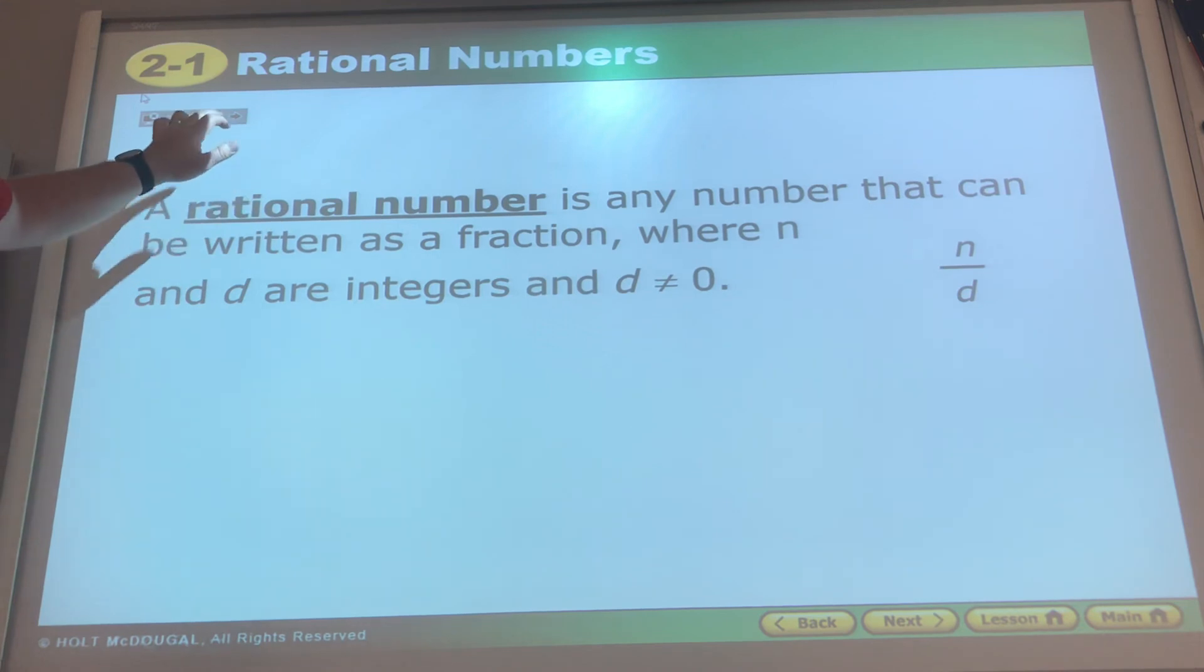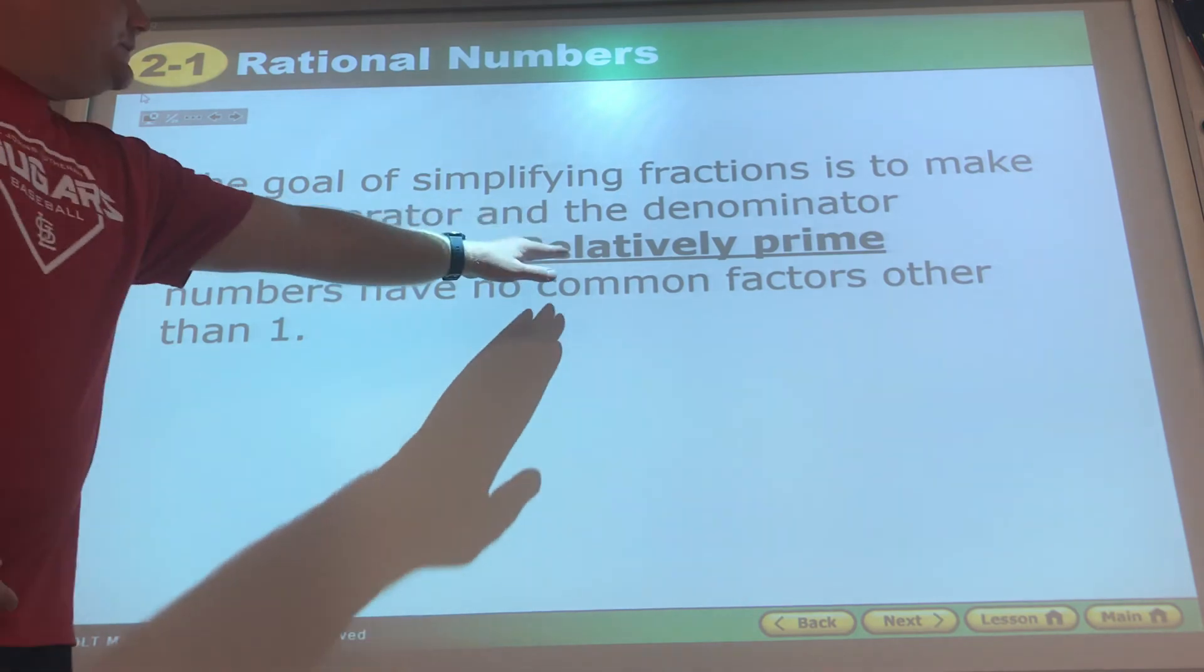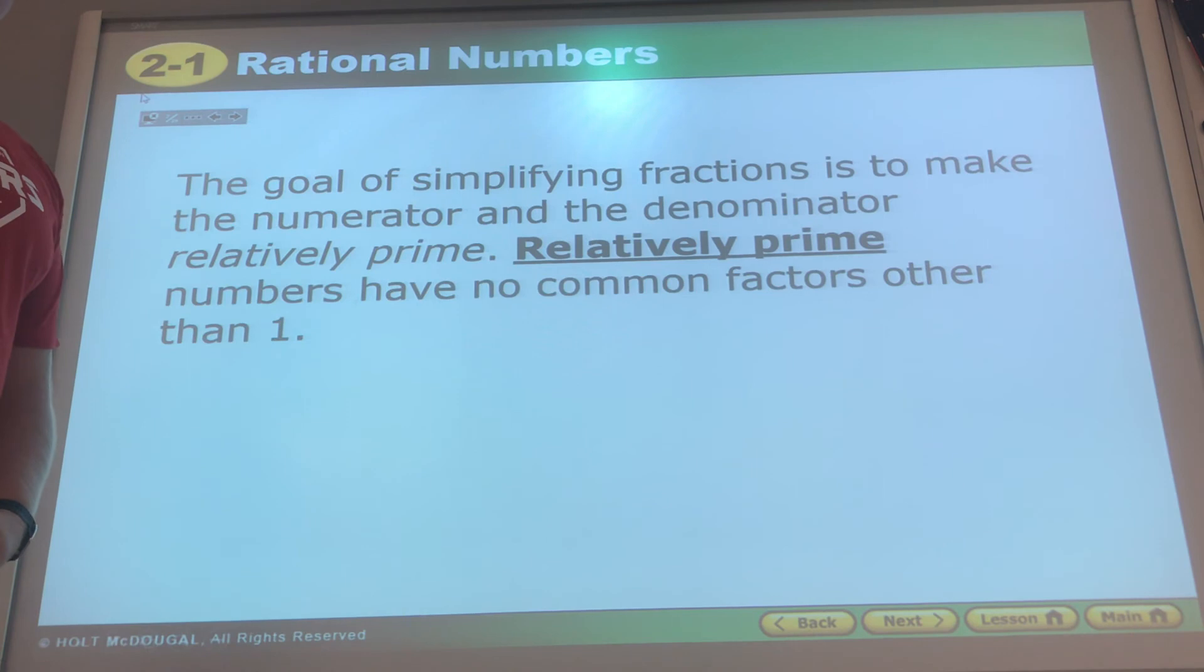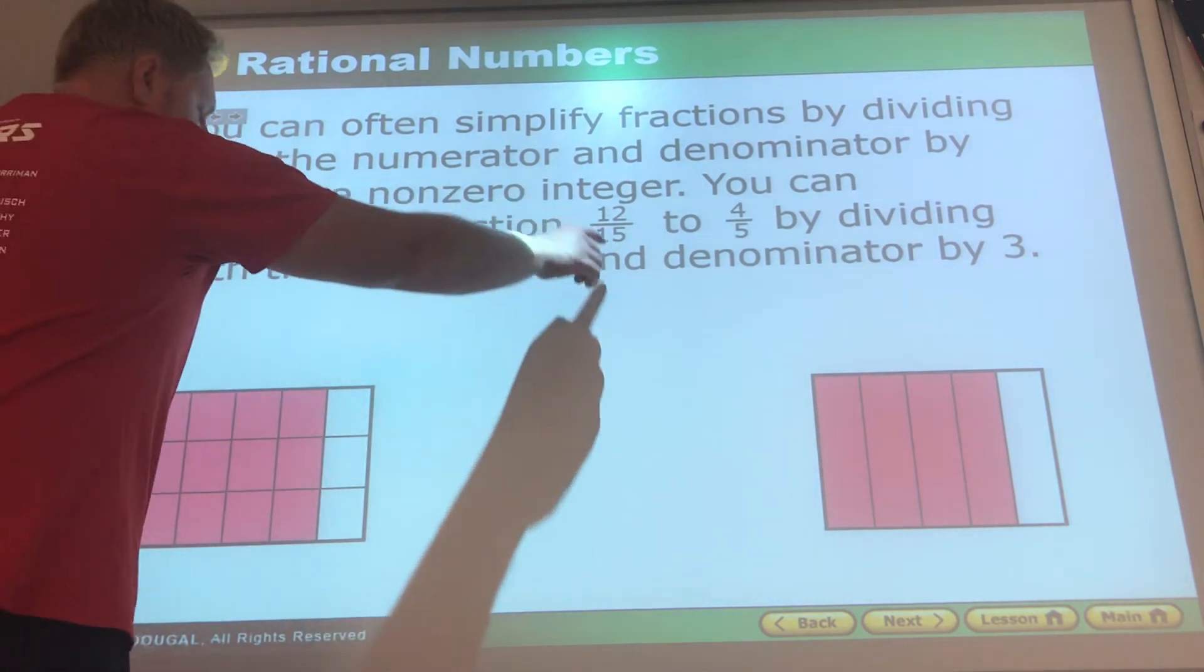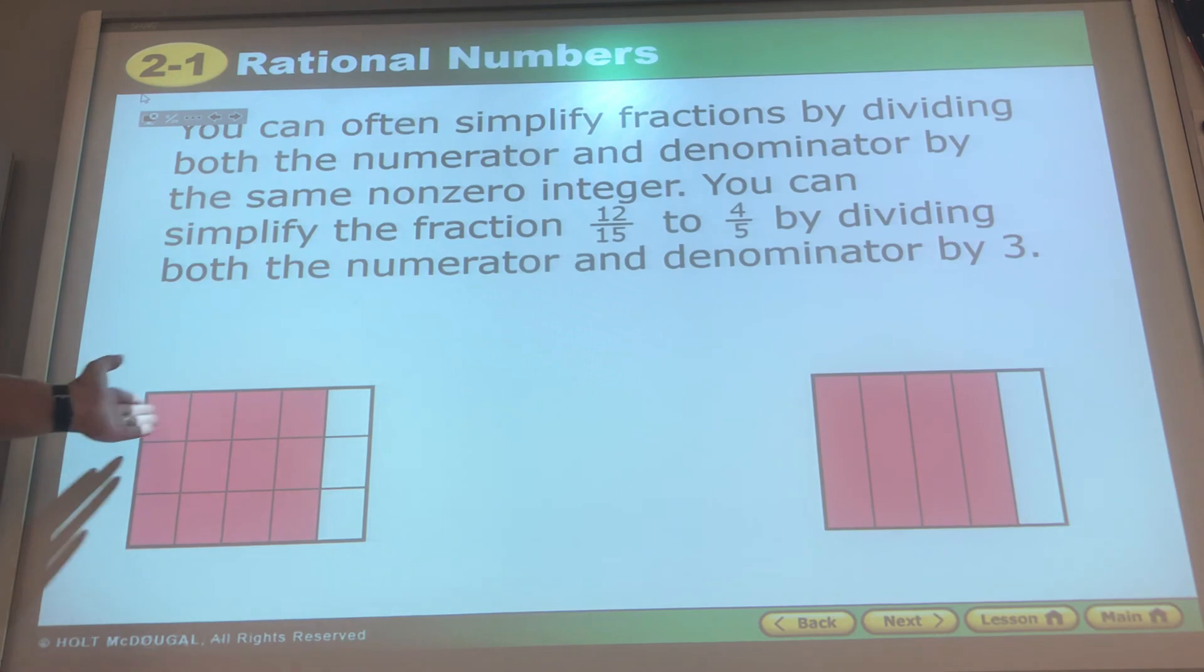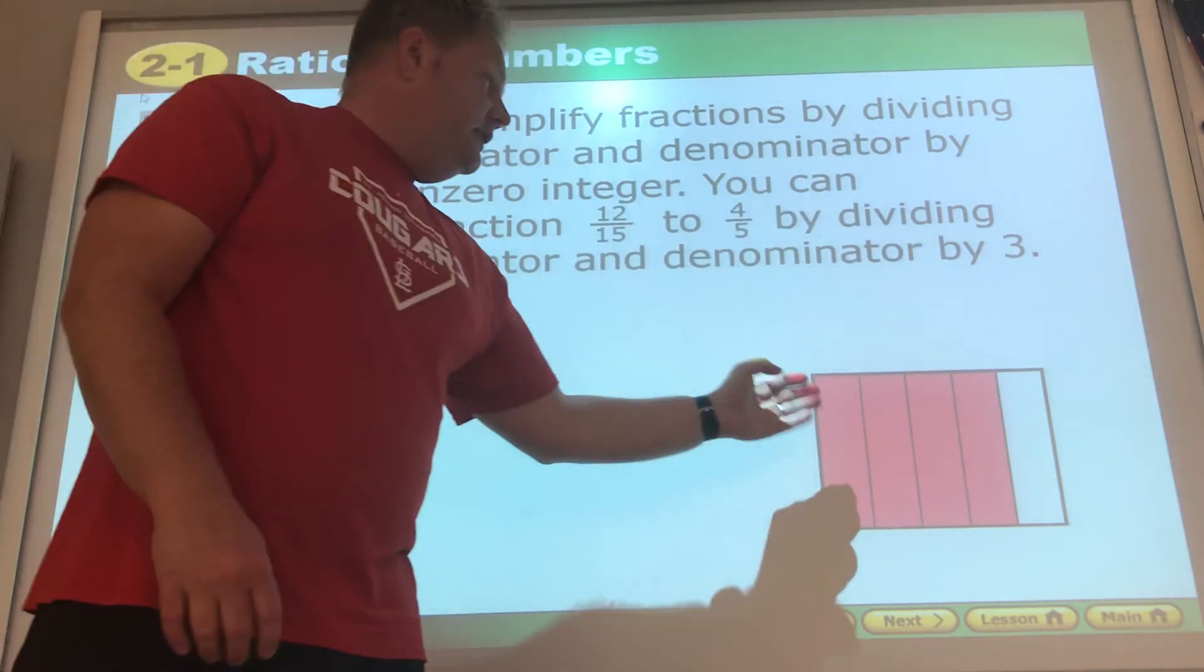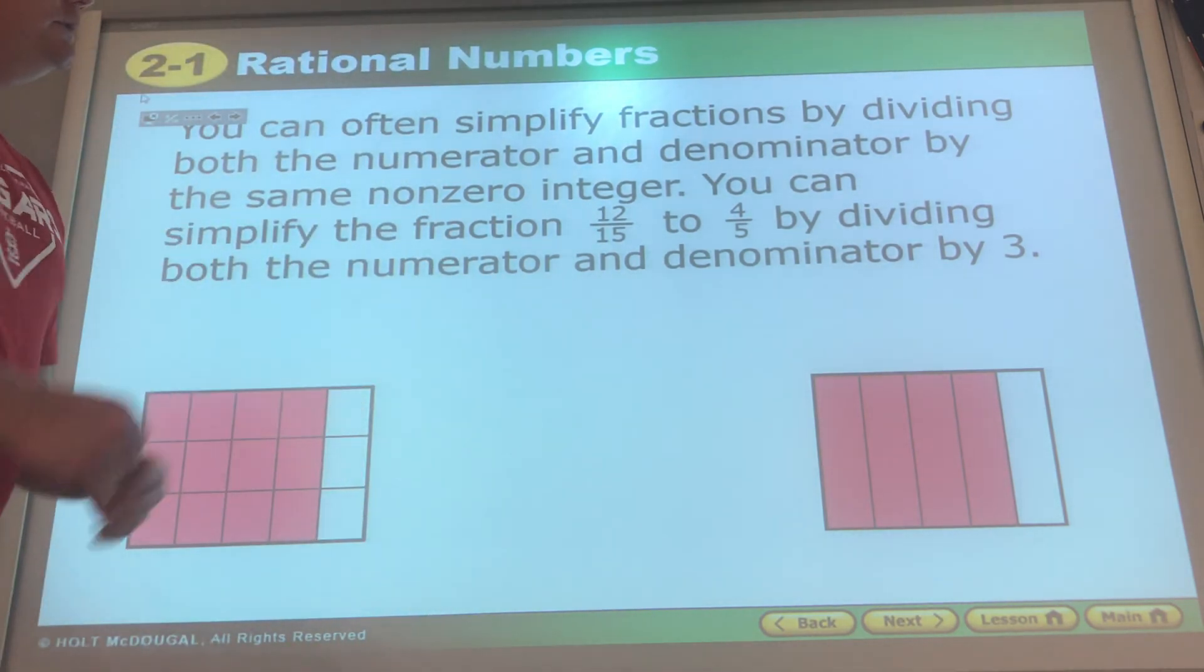Relatively prime numbers have no common factors other than one, which means they cannot be reduced if they're in a fraction. So we look here, we have 12/15, this square is divided into 15 equal spots, 12 of them are full. We have 4/5, this rectangle of the same size divided into five spots and four of the five spots are full.